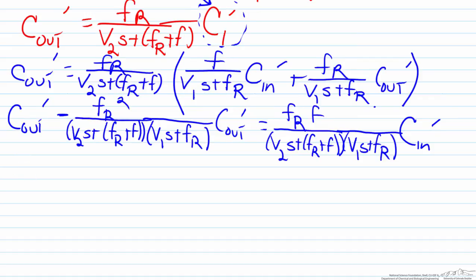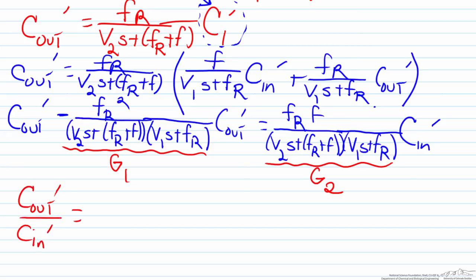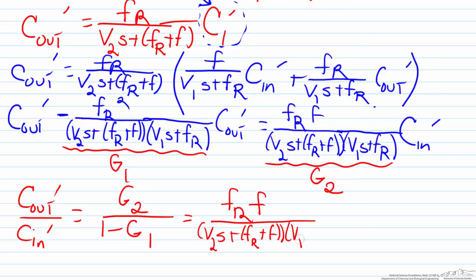To make this cleaner I'm going to call this term G_1 and this term G_2, so C_out' over C_in' equals G_2 divided by (1 minus G_1). If you notice both G_1 and G_2 have a least common denominator, so we can simplify this. We end up with F_R F over [(V_2 s + F_R + F) multiplied by (V_1 s + F_R) minus F_R squared].